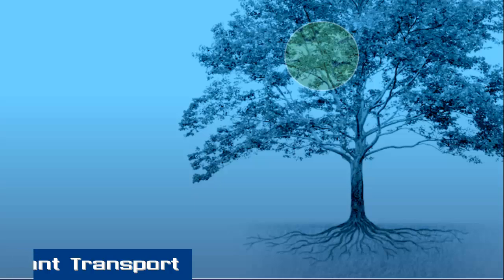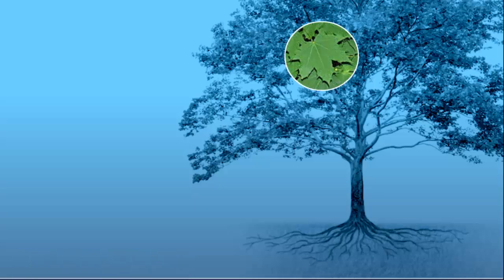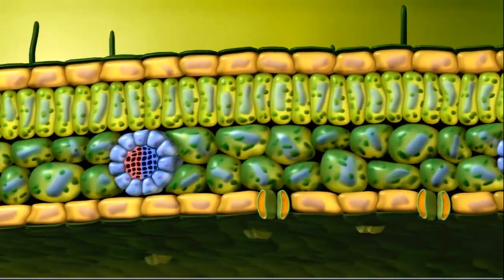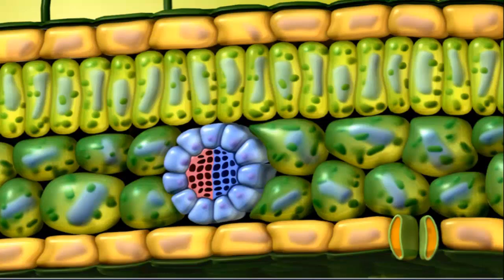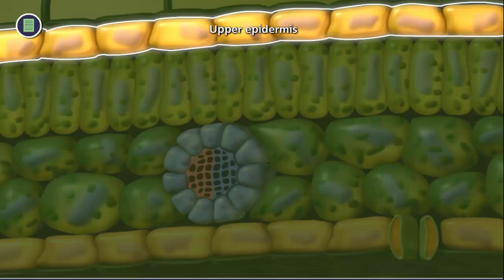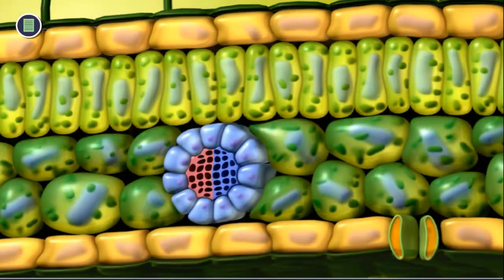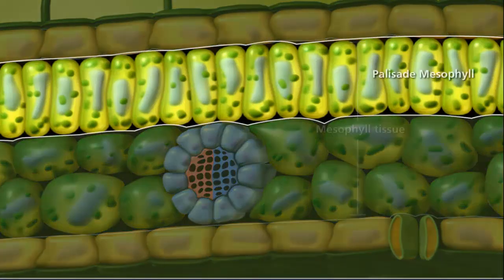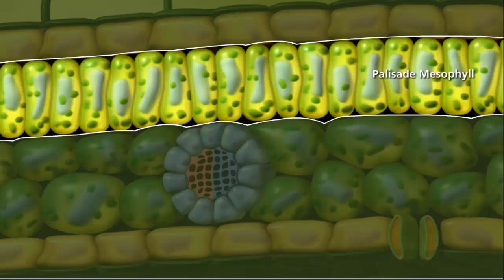Transpiration begins in the leaves. The arrangement of cells and structures in the leaf facilitate the movement of gases and water into and out of the leaf. A leaf contains several layers of specialized cells. The upper epidermis is one cell layer thick and provides a protective covering. Below that layer is mesophyll tissue. Cells in the palisade mesophyll layer are sites for photosynthesis and secretion, as well as storage of food and water.